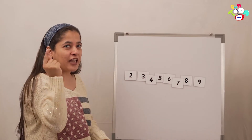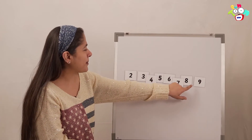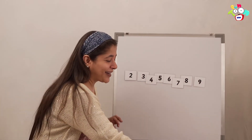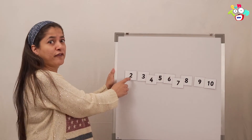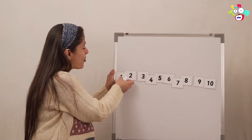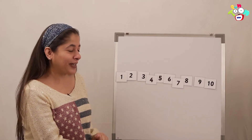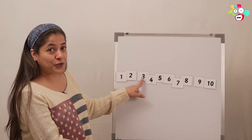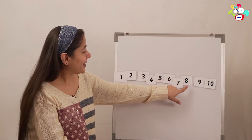And now let me see if you all remember your after and before. Tell me, what comes after 9? Very good! Number 10. And what comes before 2? Yes! Number 1. Superb! And our number line is complete. Let's read it again: 1, 2, 3, 4, 5, 6, 7, 8.